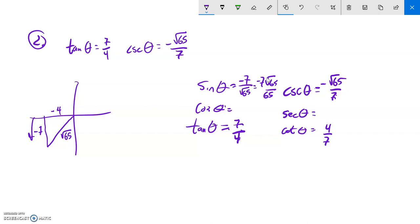But anyways, now that I'm there, I should be able to get at cosine and secant. So cosine is x over r. So that would be negative 4 over root 65. And if I rationalize that, that would be negative 4 root 65 over 65. And secant would be the reciprocal of this, negative root 65 over 4.